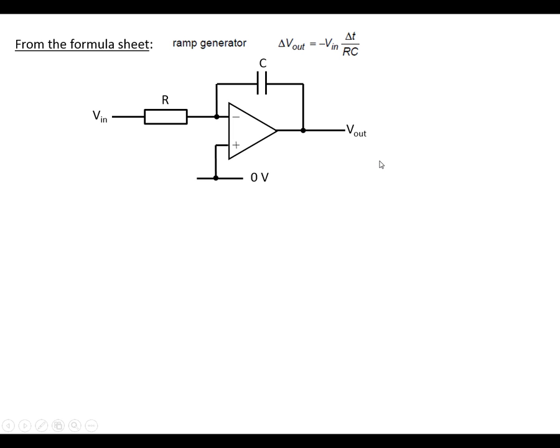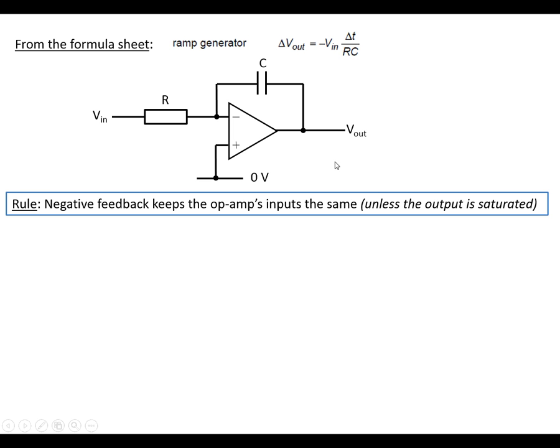To explain why this formula comes about: first of all, negative feedback, which is provided through the capacitor, keeps the op amp's inputs the same unless the output is going to be saturated. So we know that if this input's at 0 volts (that's the non-inverting input), then the inverting input is also going to be 0 volts. Let's have a look at the current through the resistor R. That's going to be the difference in voltage across each side, which is V in on one side, 0 on the other side, divided by the resistance.